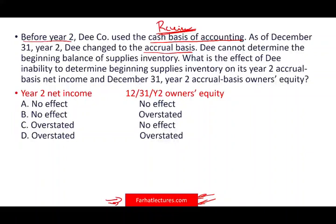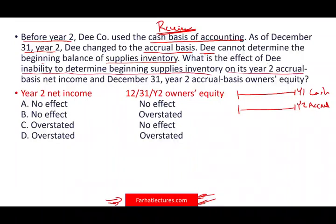Before year two, the company used the cash basis — so in year one, we used the cash basis. As of December 31st year two, we changed to the accrual. The company cannot determine the beginning balance of supplies inventory. What is the effect of that inability to determine beginning supplies inventory on year two accrual basis net income, and on December 31st year two owner's equity? We have no numbers — how are we going to solve this?